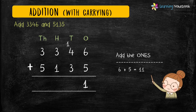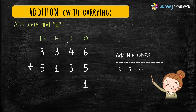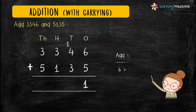We are doing this because 11 means 1 ten and 1 one, that is why we carry 1 to the tens place. In simple words, you can just remember that if you get a two digit number after addition then you have to carry, as we did here.